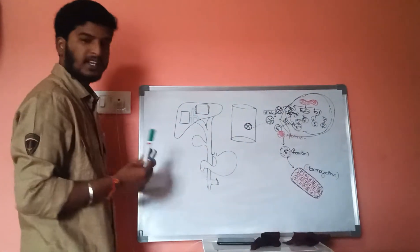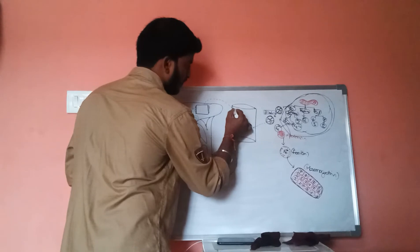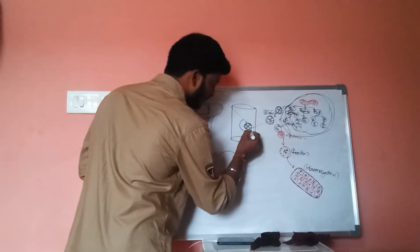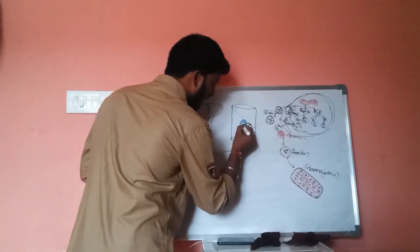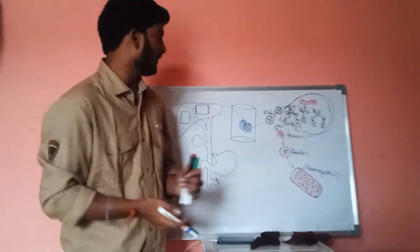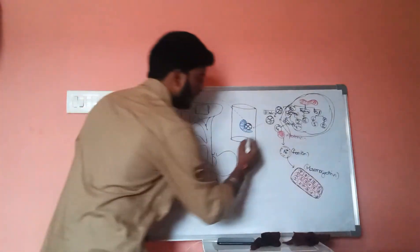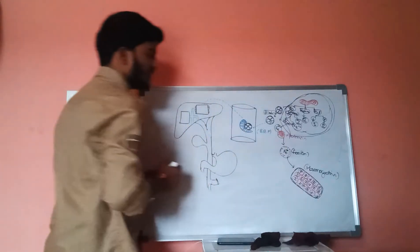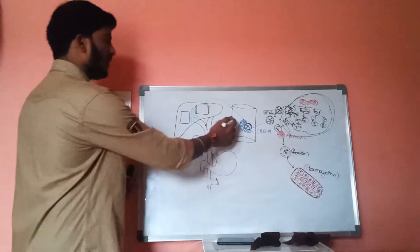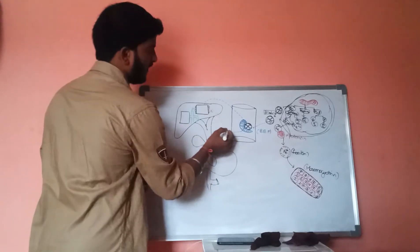Whenever this bilirubin enters the cardiovascular system, the hepatocytes release a special protein called bilirubin binding protein into the cardiovascular system, which acts on this bilirubin. This entire structure — bilirubin binding protein bound to bilirubin — is called unconjugated bilirubin when present in the cardiovascular system. This unconjugated bilirubin will then enter back into the hepatocytes.